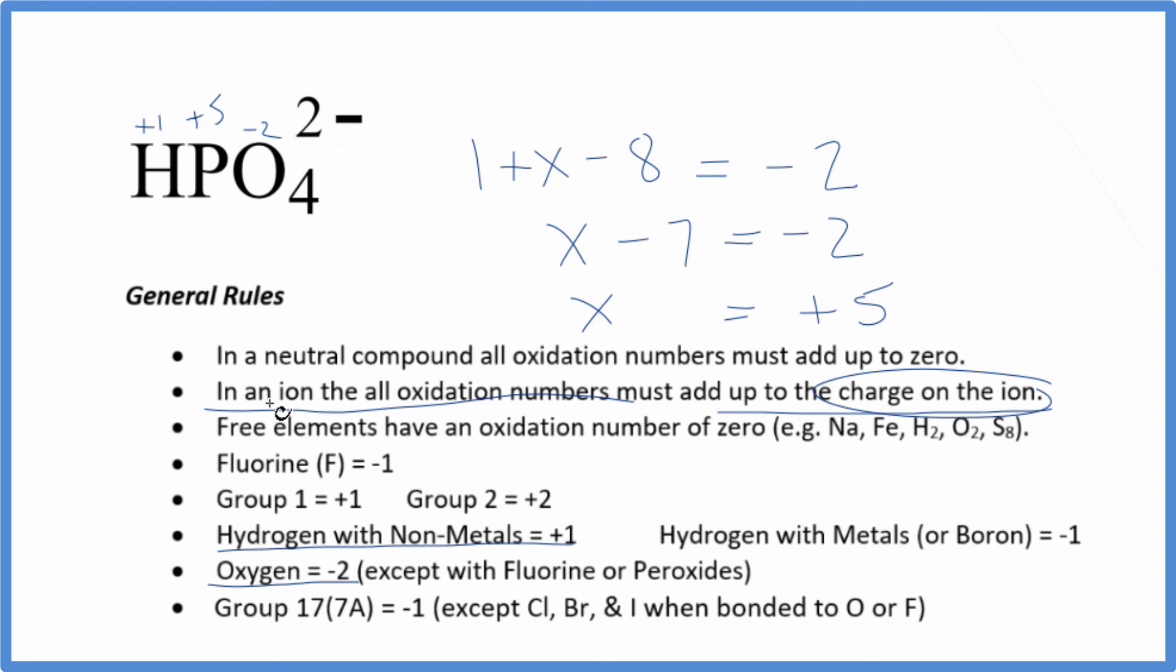That's because we have an ion, and the oxidation numbers add up to the charge on the ion. This is Dr. B with the oxidation numbers for the hydrogen phosphate ion. Thanks for watching.